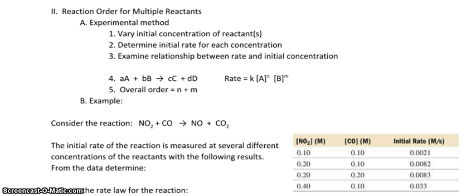We have earlier found that if we're talking about a decomposition reaction where you only have one reactant, you can see if a reaction is zero order, first order, or second order by seeing the effect if you double the initial concentration. Zero order: no effect on rate. First order: doubling concentration doubles the rate. Second order: doubling the reactant quadruples the rate. So how many reactions really are decomposition? Most reactions out there have more than one reactant, so how do I deal with this? That's where reaction order for multiple reactants comes in.